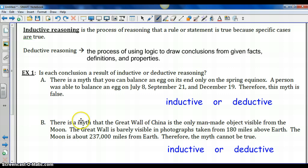Let's begin today's lesson. We are going to study deductive reasoning. Inductive reasoning, if you'll remember, is the process of reasoning that a rule or statement is true because specific cases are true. However, deductive reasoning is the process of using logic to draw conclusions from given facts, definitions, and properties. So the difference is that inductive reasoning uses specific cases and examples or counterexamples. Deductive reasoning uses mathematical facts, definitions, and properties in geometry.